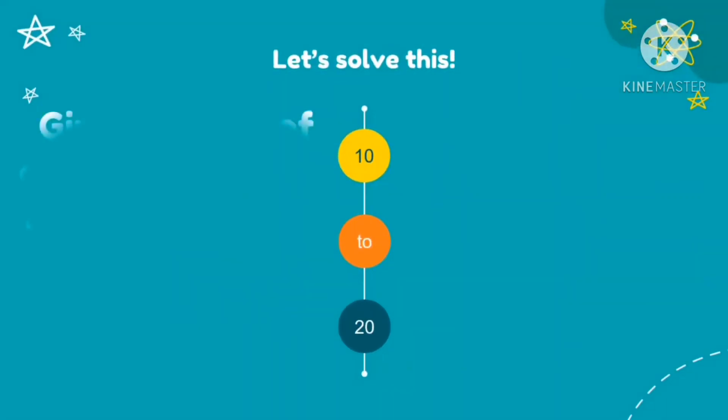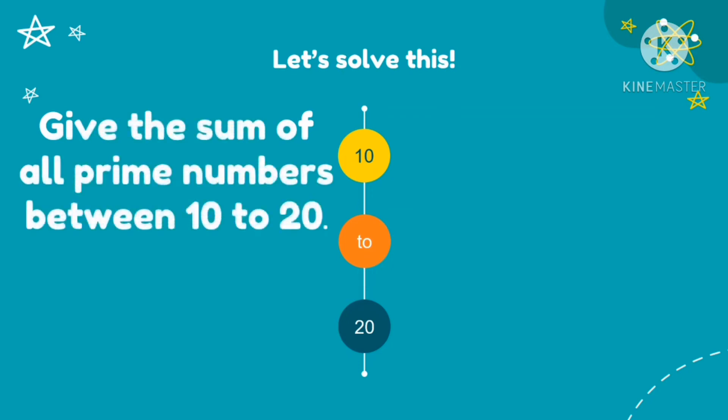Let's solve another problem. Give the sum of all prime numbers between 10 to 20. So we are going to get the sum of all prime numbers between 10 to 20 only. So our first step is to list down all the prime numbers between 10 to 20. So the prime numbers that are in between 10 to 20 are 11, 13, 17, and 19. Then, get the sum. So our sum is 60.